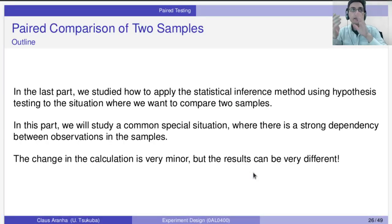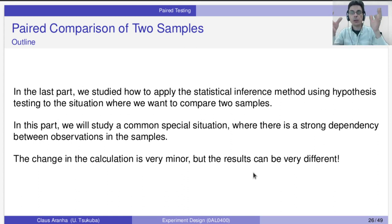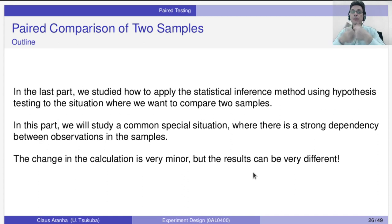In the last video, we studied how to apply the statistical inference method using hypothesis testing when we want to compare two samples — let's say method A and method B — and we saw that we can do that using the same t-test that we used in the first week.